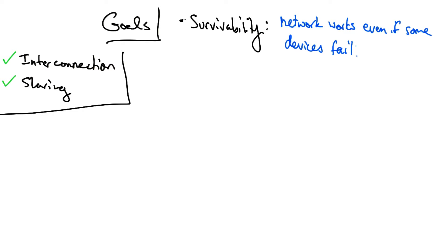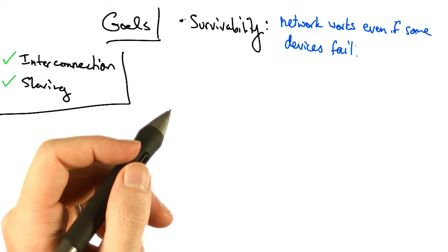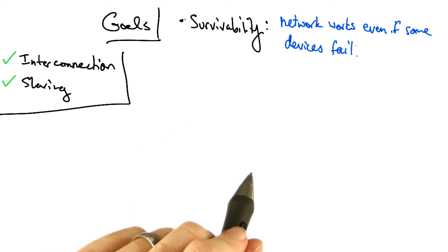One of the goals discussed is survivability, which states that the network should continue to work even if some devices fail, are compromised, and so forth.